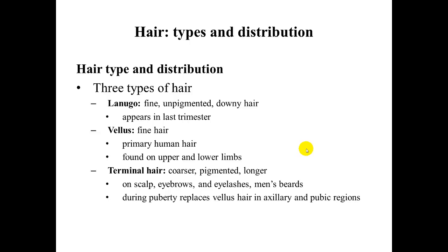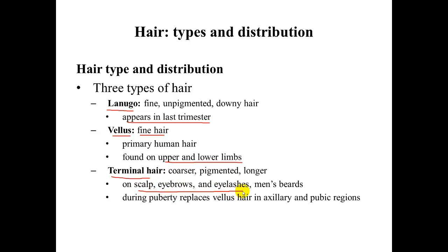There are three types of hair: lanugo, vellus, and terminal hair. Lanugo is the fine, unpigmented hair seen on newborns that appears in the last trimester of pregnancy. Vellus is a fine hair found on the upper and lower limbs, mainly of females or children. Terminal hair is the coarser, pigmented, longer hair seen in the scalp, eyebrows, and eyelashes, including men's beards. During puberty, it replaces vellus in the axillary and pubic regions.